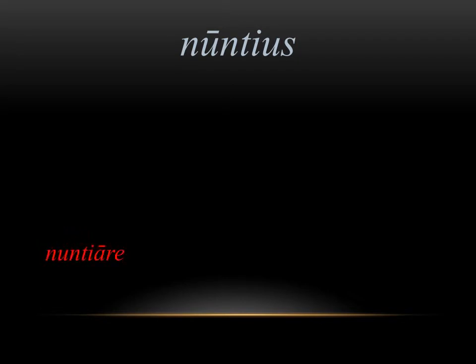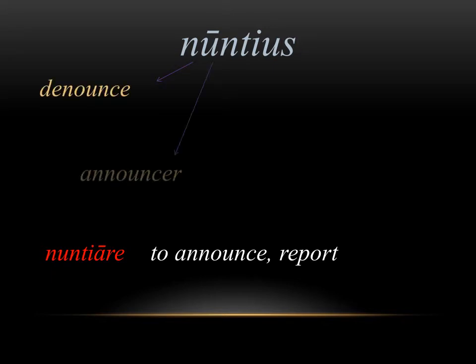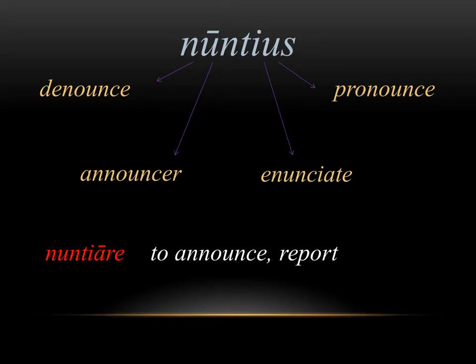Nuntius in Latin is a word that means messenger, and it's coming from the verb nuntiare, which means to announce or report. It gives us a bunch of English derivatives such as denounce, announcer, enunciate, and pronounce. They're all holding this root of a messenger or a reporter. An announcer in a sporting event is the person who's reporting details of the game to an audience. If you think of enunciate and pronounce, it's talking about how you speak, which is what a messenger does — they're delivering a message.